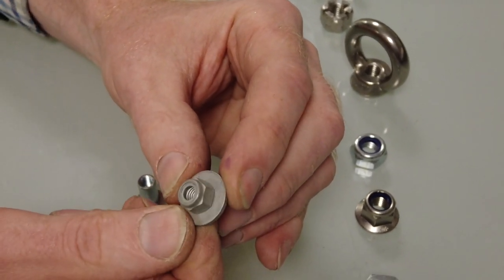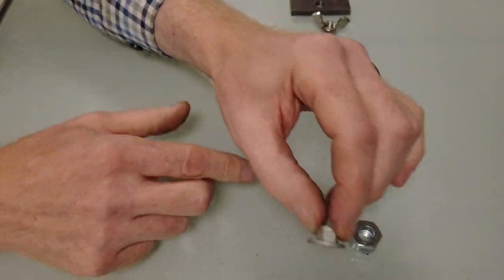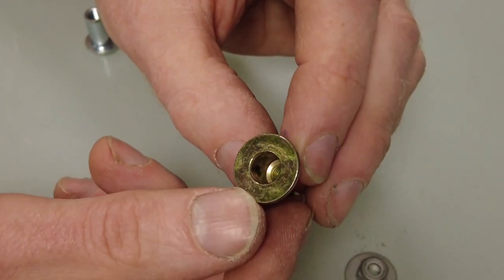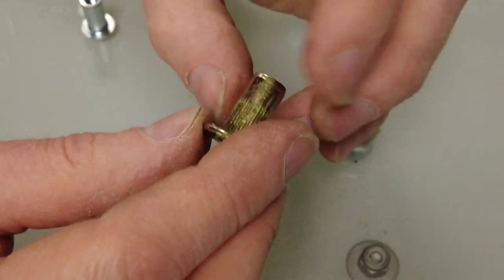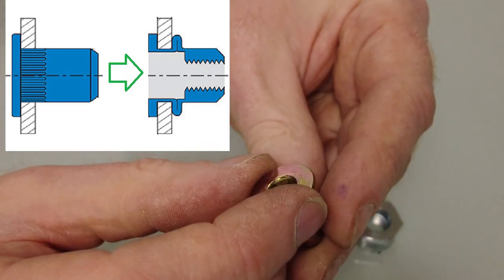This one is a rib nut. These especially you need a special tool to insert these, and these collapse and form a captive nut. Look up rib nuts, but if you see one of those, that's an uninserted rib nut.